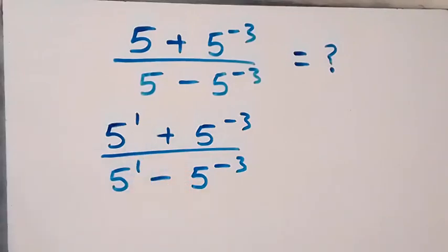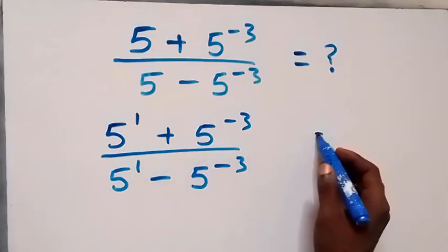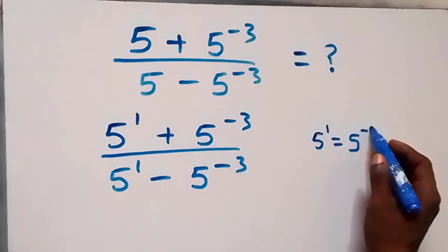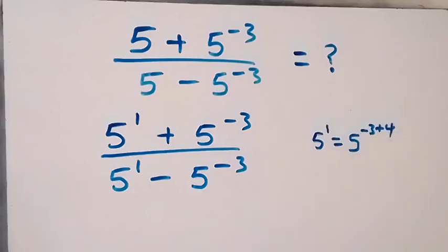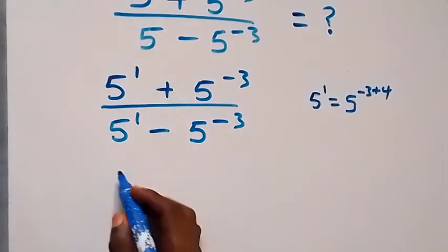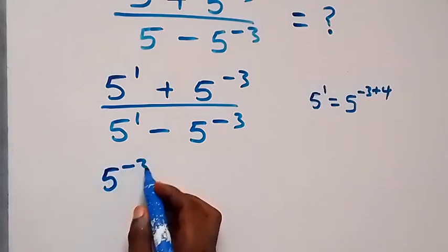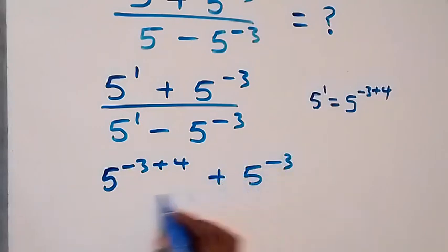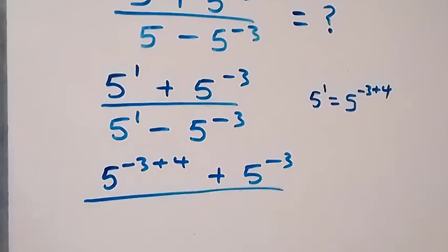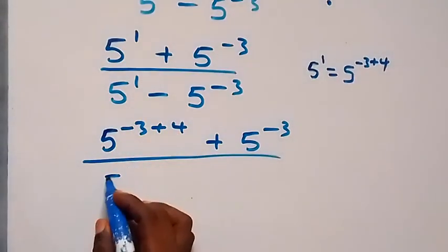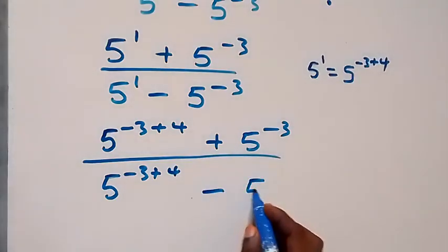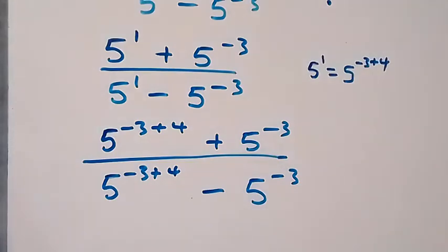So 5 raised to power 1 is the same thing as 5. Then this 5 raised to power 1, here we can write it as 5 raised to power minus 3 plus 4 — since minus 3 plus 4 is the same thing as 1. This will now become 5 raised to power minus 3 plus 4, then plus 5 raised to power minus 3, divided by 5 raised to power minus 3 plus 4 minus 5 raised to power minus 3.